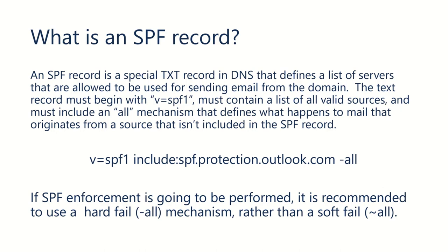The format of the SPF record always begins with v=SPF1, and then we add each of the mechanisms we're going to use to say that email is going to be allowed from these sources. In a very simple setup — for example, if you're only using Office 365 to send email — this would be your SPF record.